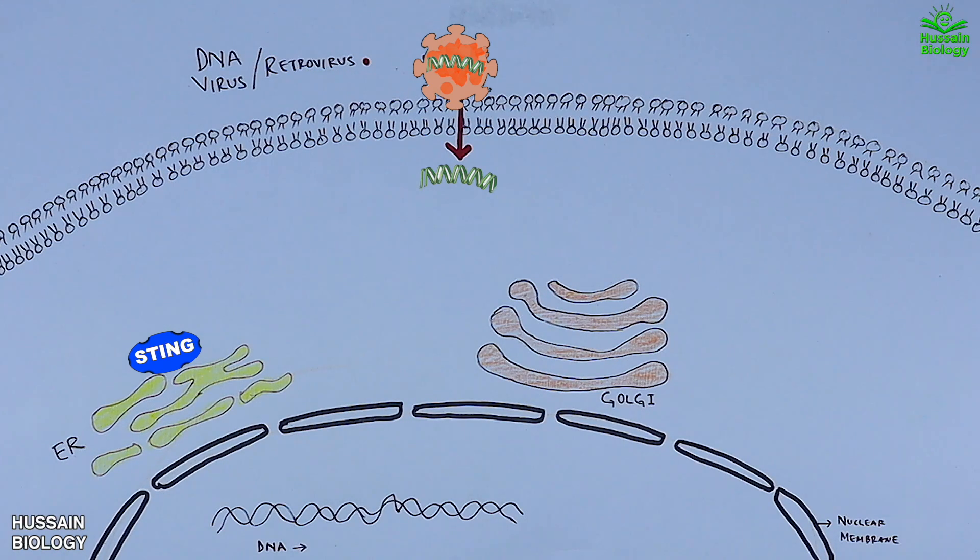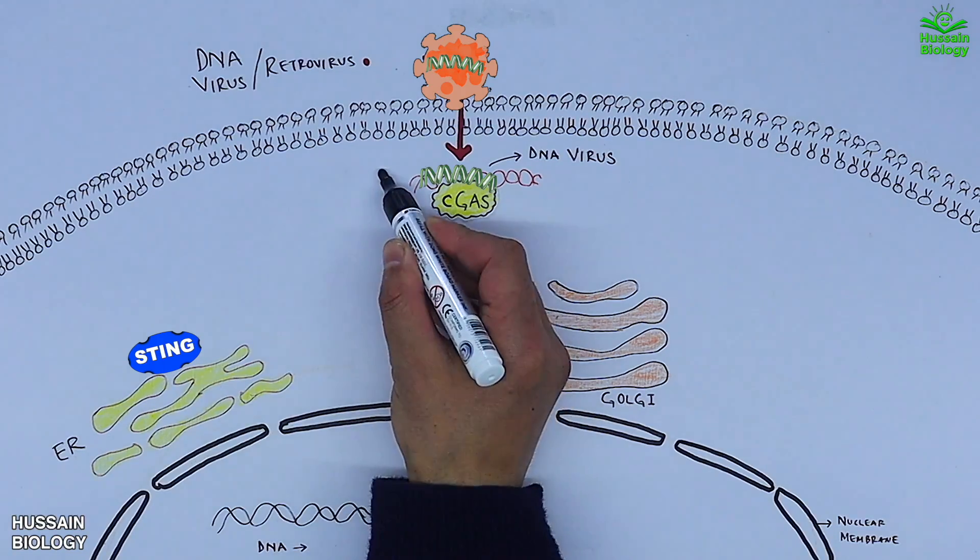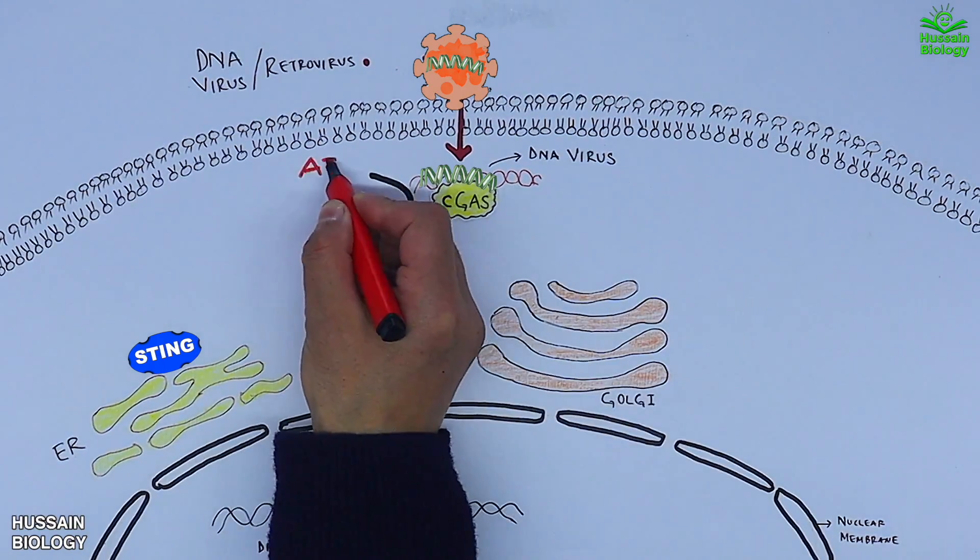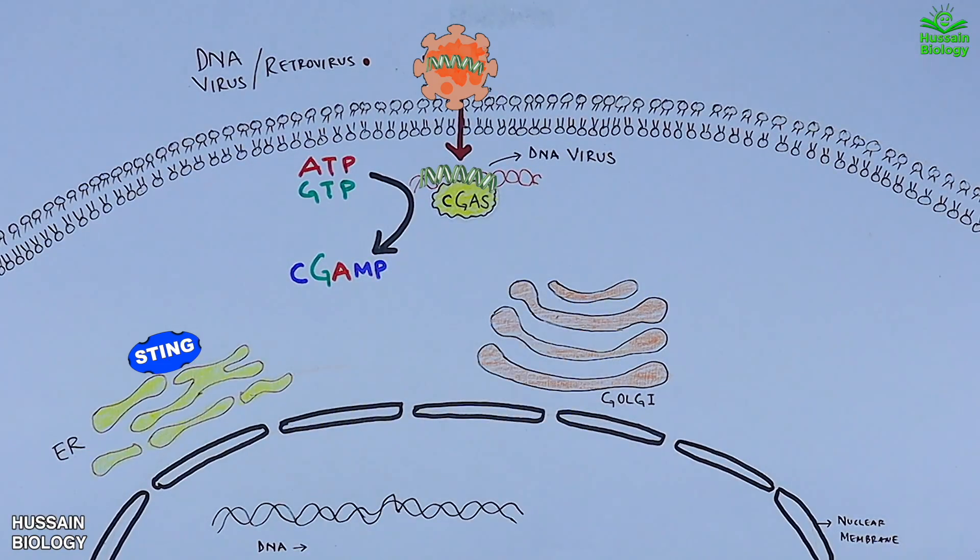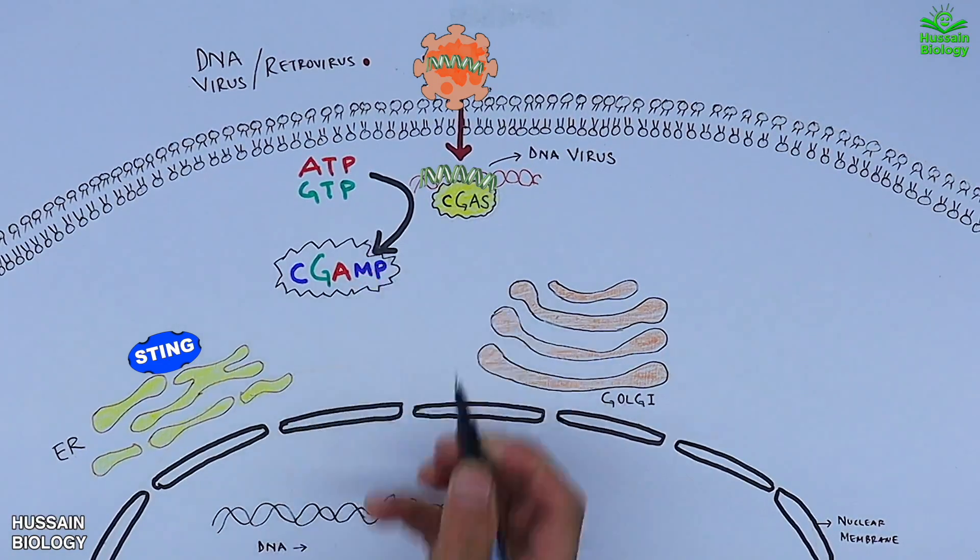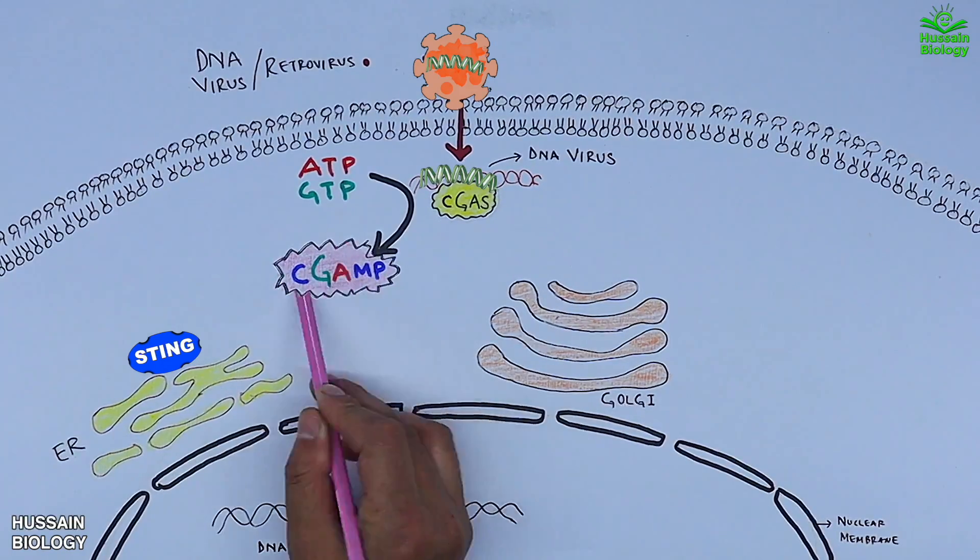Inside the cell, the DNA virus stimulates the recruitment of cGAS molecule. The cGAS-virus complex acts on ATP and GTP and forms the cGAMP molecule. This cGAMP, the cyclic GMP-AMP complex, acts as a secondary messenger.